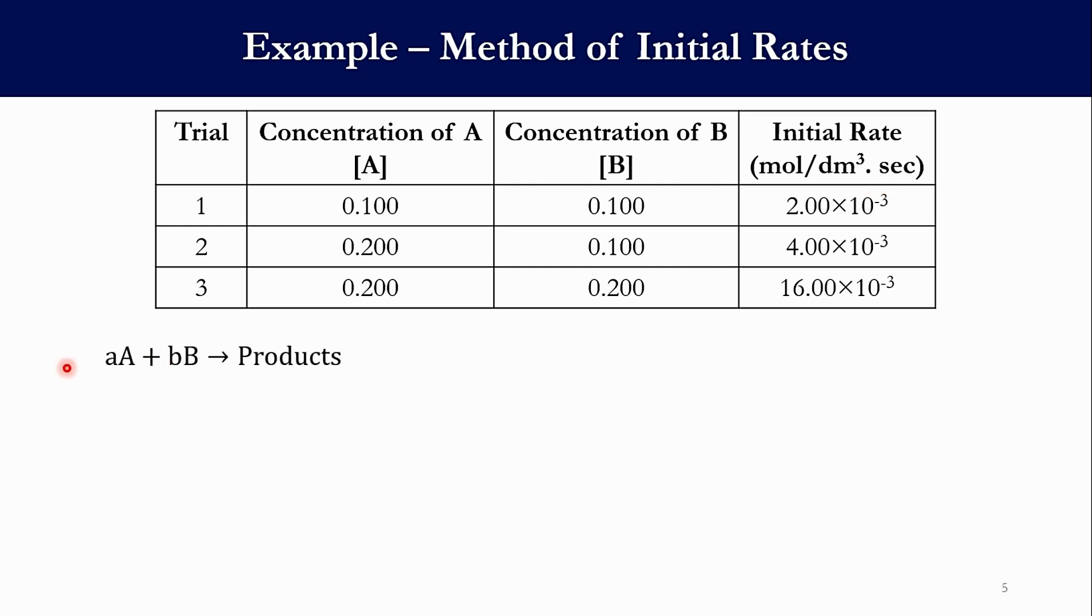So the system is aA + bB → Products. Obviously small a, b are the stoichiometric coefficients and capital A and B are the chemical species. So accordingly we can write Rate = K[A]^α[B]^β. For the first trial it will become Rate₁ = K[A₁]^α[B₁]^β, and for the second trial it will be Rate₂ = K[A₂]^α[B₂]^β.